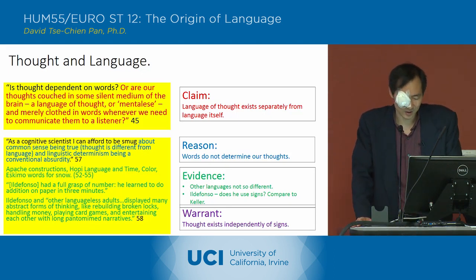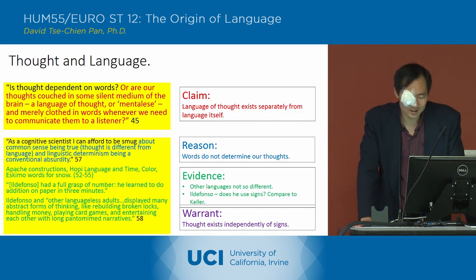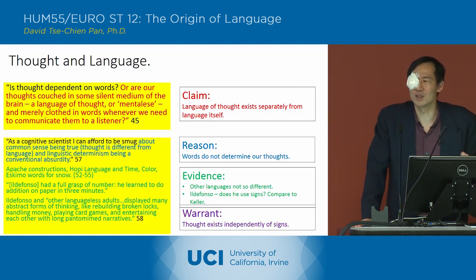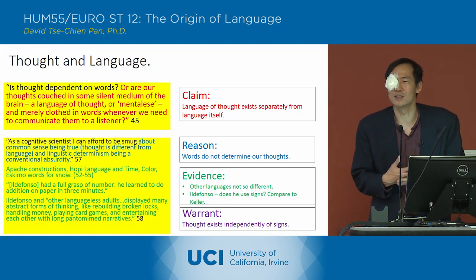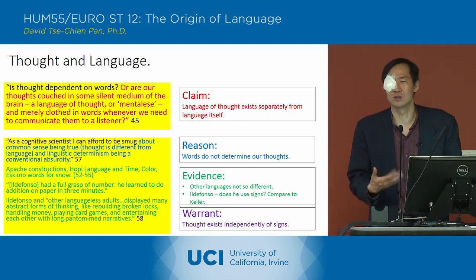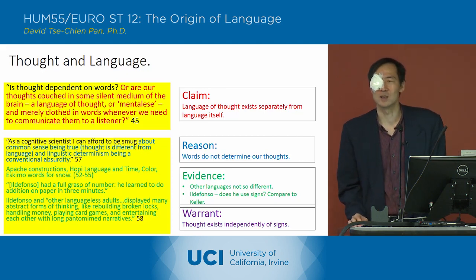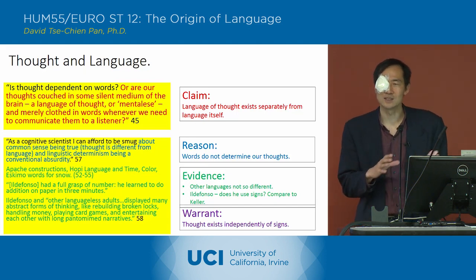There's obviously a sense in which people can function and think without language, which is further evidence that thought and language are two separate processes. The underlying warrant is that thought exists independently of signs — and this contrasts with Peirce's idea that thought itself really proceeds according to a progression of signs, that thought itself consists of signs. Pinker seems to have an alternative warrant: he imagines a language of thought that is truly independent of signs.